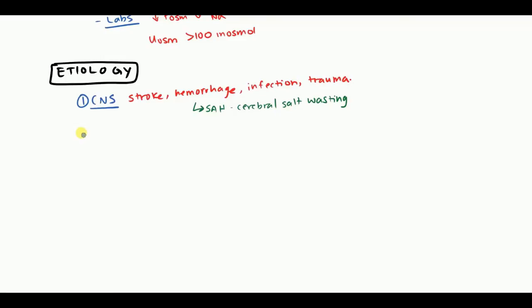But that's secondary to salt wasting. The patient is losing a lot of salt, becoming hyponatremic, and so the body is secreting ADH to get rid of it. This is important to differentiate the two. As we talk about treatment, the treatment can be vastly different. So something to keep in mind with subarachnoid hemorrhage as a secondary cause of SIADH.